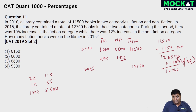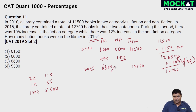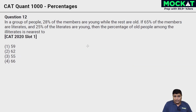What do we need to find? How many fiction books were in the library — not in 2010, but in 2015. That's 10% more than 6,000, which comes to 6,600. Option 3 is the answer.